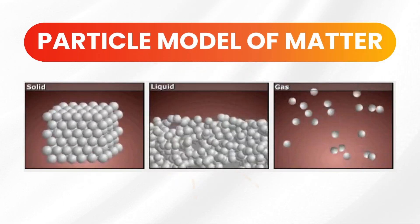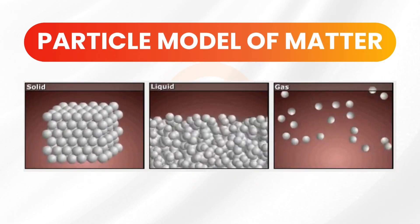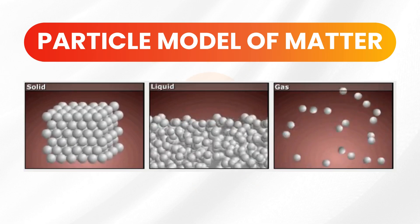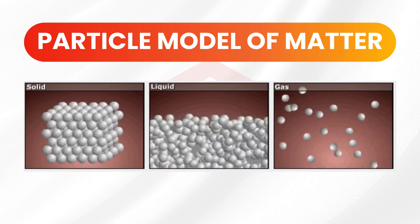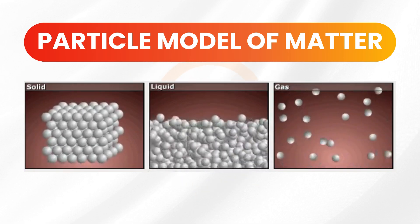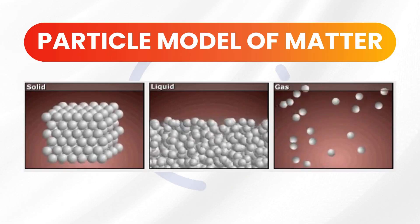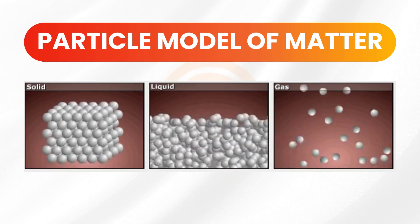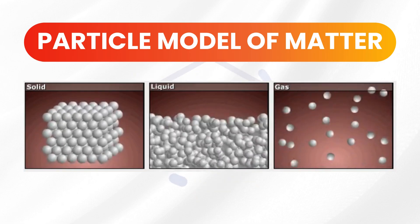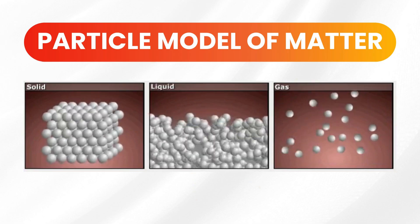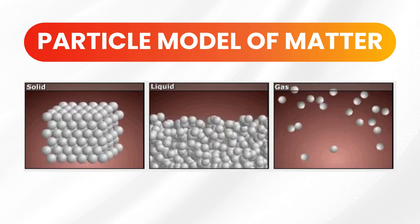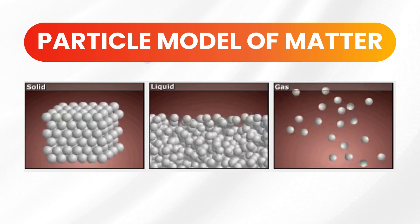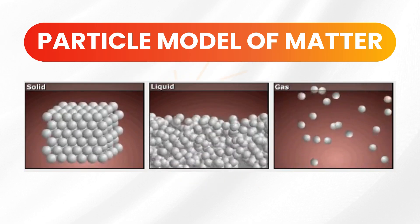The particle model illustrates the differences and commonalities of solids, liquids, and gases in terms of volume, shape, compressibility, and density, or molecular arrangement among others. So, what are the descriptions of the particles of each state of matter and their properties?